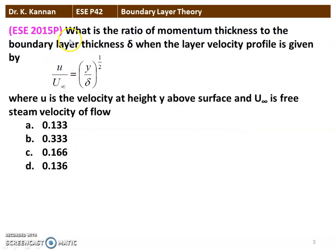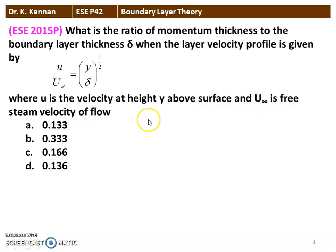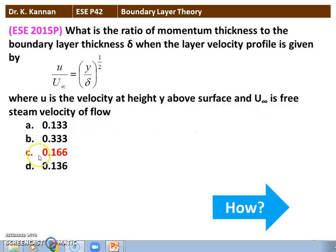Next question from the 2015 question paper. What is the ratio of momentum thickness to the boundary layer thickness delta when the velocity profile is given by u/u∞ = (y/δ)^(1/2), where u is the velocity at height y above the surface and u∞ is the free stream velocity? The answer is 0.166. The ratio of momentum thickness to the boundary layer thickness delta is 0.166.